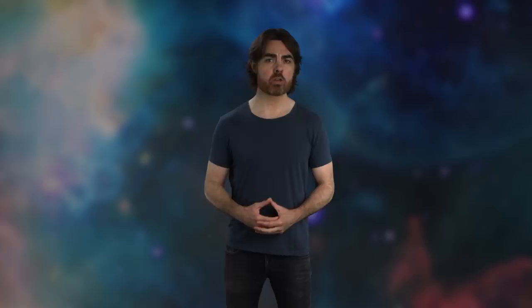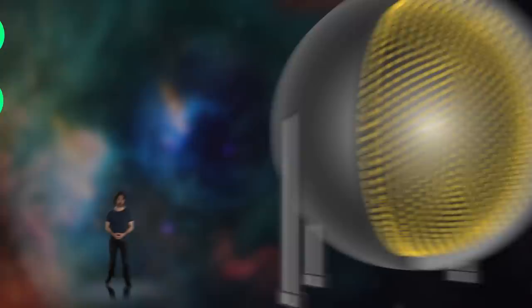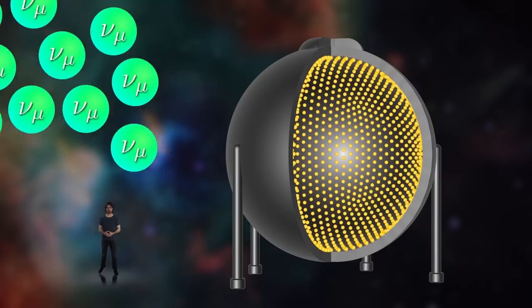A lot more muon neutrinos made the transition to electron neutrino than was expected according to the basic standard model. But one way to speed up that transition is to introduce sterile neutrinos as an intermediate step in the oscillation. If muon neutrinos can flip their chirality and become sterile neutrinos, then it's an easier transition from sterile neutrino to electron neutrino. And that's a proposed explanation of the Miniboon team.